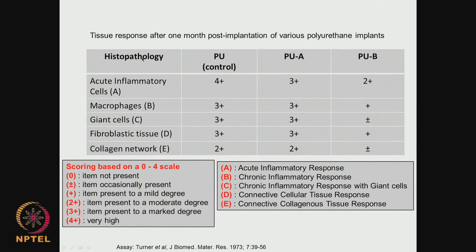From the histopathology data we can count the number of different types of tissues that are formed and then quantify them. This is the control, and these are 2 different modifications to the control. After 1 month of implantation we are looking at different types of tissues that are formed - acute inflammatory response, macrophages, giant cells and fibroblastic tissue, and collagen network.